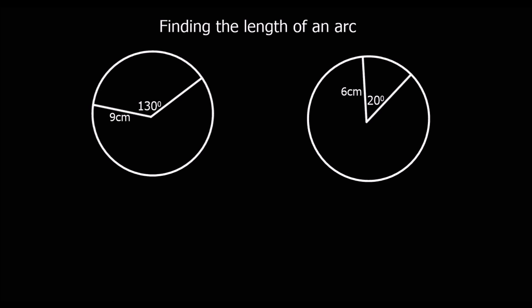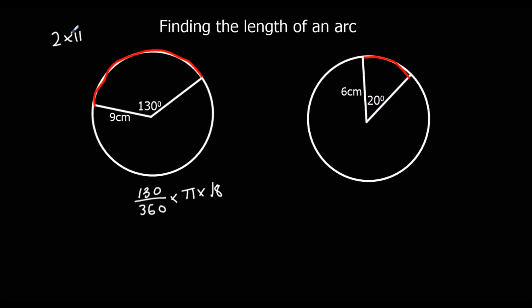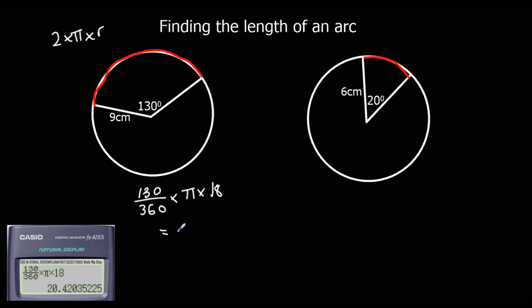Here are two questions for you to try — pause the video and give them a go. For the first one, we've got 130 degrees, so 130 out of 360, of the whole circumference: pi times diameter, which is 18. You could use 2 times pi times the radius instead — it gives the same answer. That gives us 20.4 centimetres to one decimal place.